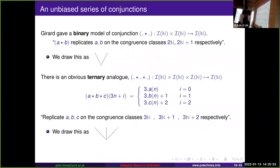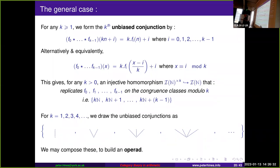How do we move off the one-skeleton of the associahedron? We generalize the conjunction. Girard's conjunction is binary — let's generalize it to an n-ary operation. Instead of replicating the behavior of f and g on congruence classes modulo 2, let's replicate a, b, c on congruence classes modulo 3, then a, b, c, d on congruence classes modulo 4, modulo 5, and so on. We form a series of unbiased conjunctions — one of each arity — and draw these as trees to build an operad.